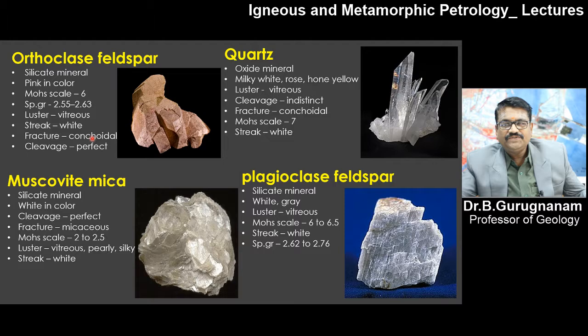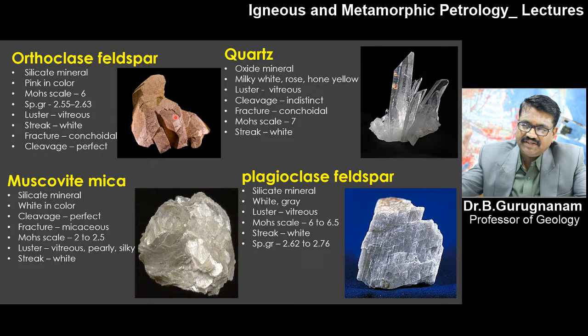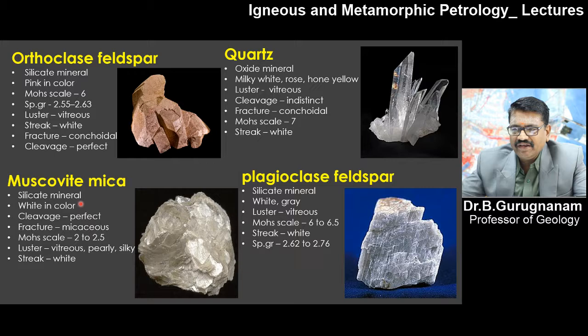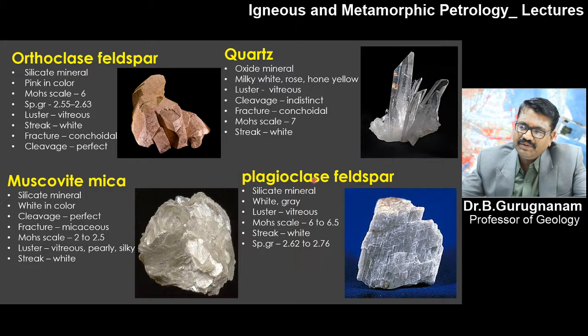Orthoclase feldspar is a silicate mineral, pink in color, with vitreous luster, white streak, conchoidal fracture, and very perfect cleavage. Muscovite mica has increasing quartz content, is white in color, with perfect cleavage, micaceous fracture, Mohs hardness of 2 to 2.5, vitreous pearly luster, and white streak. Plagioclase feldspar is a silicate mineral, white to gray in color, with vitreous luster, Mohs hardness of 6 to 6.5, white streak, and specific gravity between 2.6 to 2.76. Quartz is an oxide mineral, milky white or rose or honey yellow in color, with vitreous luster, indistinct cleavage, conchoidal fracture, and Mohs hardness of 7.